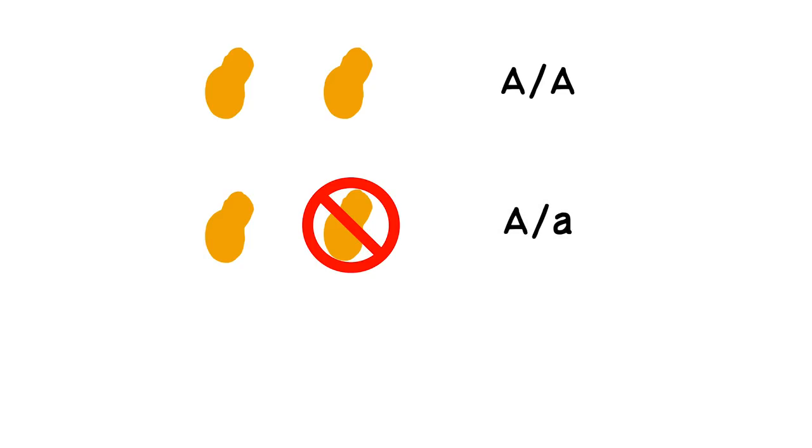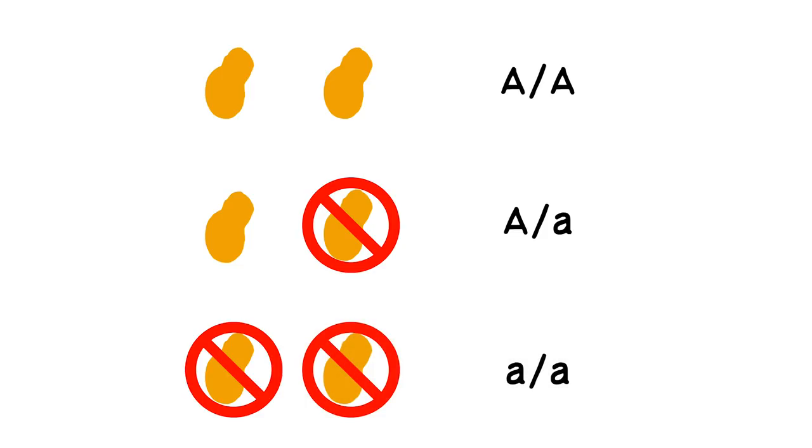The possible combinations at the A locus are similar to the E locus. Two working copies are noted down with two uppercase As. One good and one broken allele are written with an uppercase A and a lowercase a, and two broken alleles are written with two lowercase As.